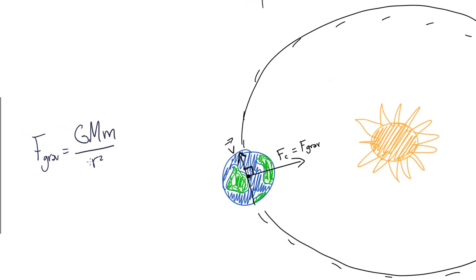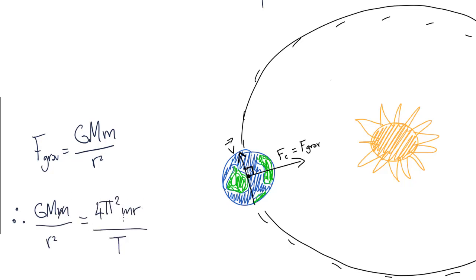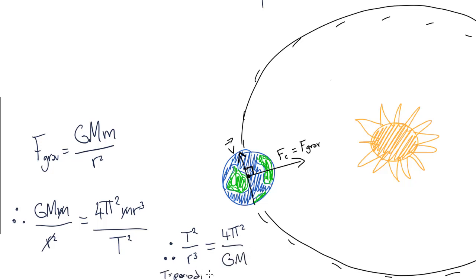We have derived that the centripetal force is equal to 4π²mr divided by T squared. We also know that the gravitational force is equal to big G times big M times small m divided by r squared, which is the gravitational constant times the mass of the object being orbited times the mass of the object in orbit, divided by the radius squared. If we set the gravitational force and the centripetal force equal to one another, cancel out the mass of the Earth from both sides, and move r squared over, we can see that GM equals 4π²r³ divided by T squared. Rearranging, T squared divided by r cubed is equal to 4π² divided by GM.